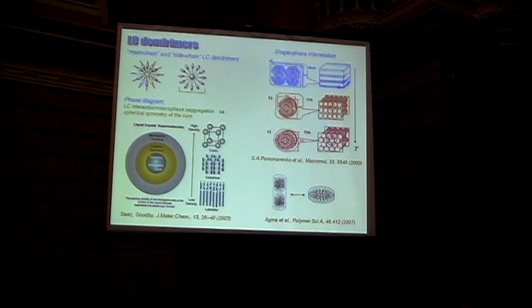So what happens if we combine liquid crystalline groups and dendritic structures? This can be combined in the main chain fashion by incorporating mesogens inside the structure, or in a sort of side chain fashion when they only have the shell of the macromolecule.